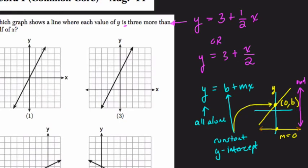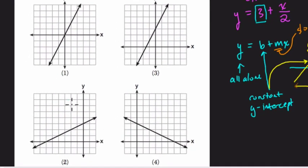What else do you know in mx plus b format? Well, you know that the coefficient, the number in front of x, is the slope. So in this situation, what's our y-intercept? Well, it's 3. So we know our line crosses the y-axis at 3.